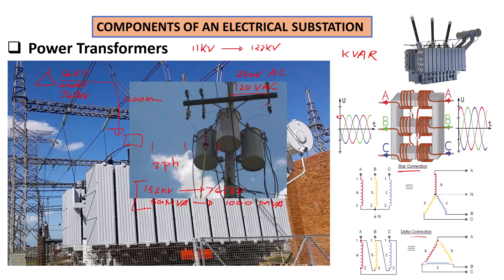We've been talking about power transformers mostly located in transmission substations — that will be for long distance transmission. You must have your star connection configured for high-voltage transmission lines. You can also have power transformers located next to generators. On the generator side, the primary will be the delta side because in the delta configuration you don't need a neutral connection.